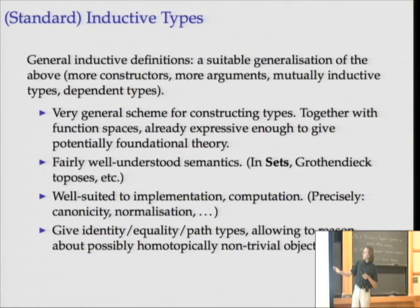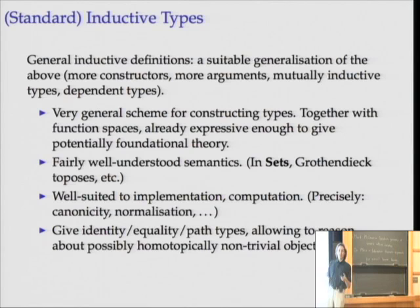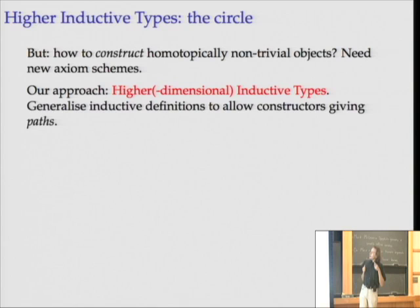Path types in a space can have lots of different paths between the same thing, giving us a way to reason about homotopically non-trivial objects. But if we want to do homotopy theory in the type theory, we also need ways to construct homotopically non-trivial objects. That's what higher inductive types are — the 'higher' is short for 'higher dimensional,' and that's the main motivation for defining them.